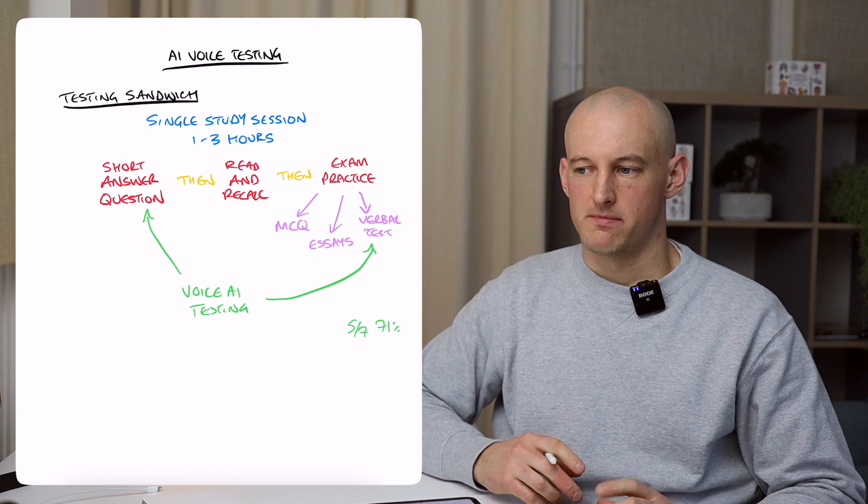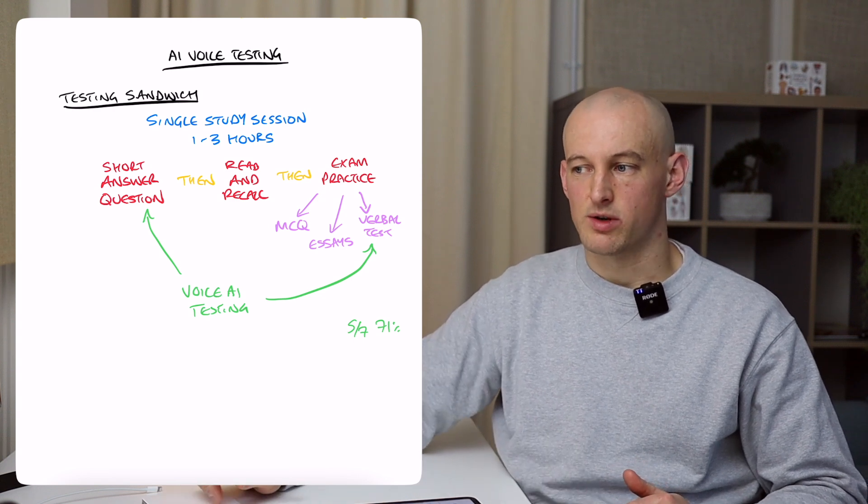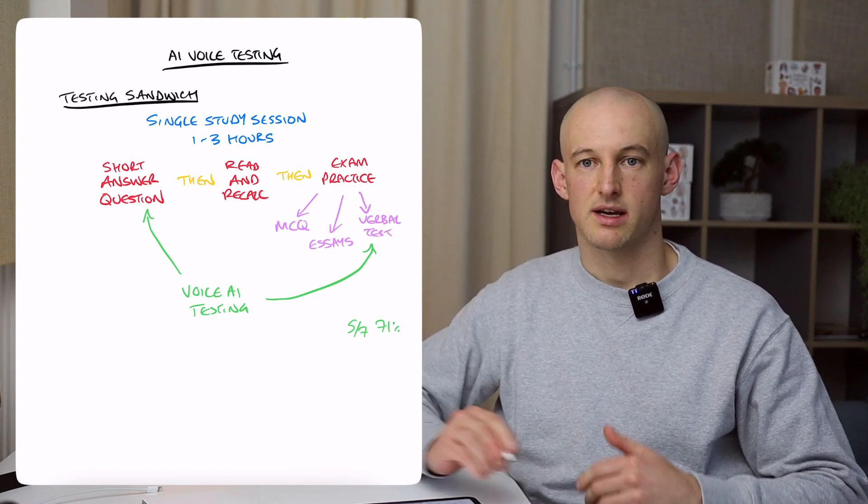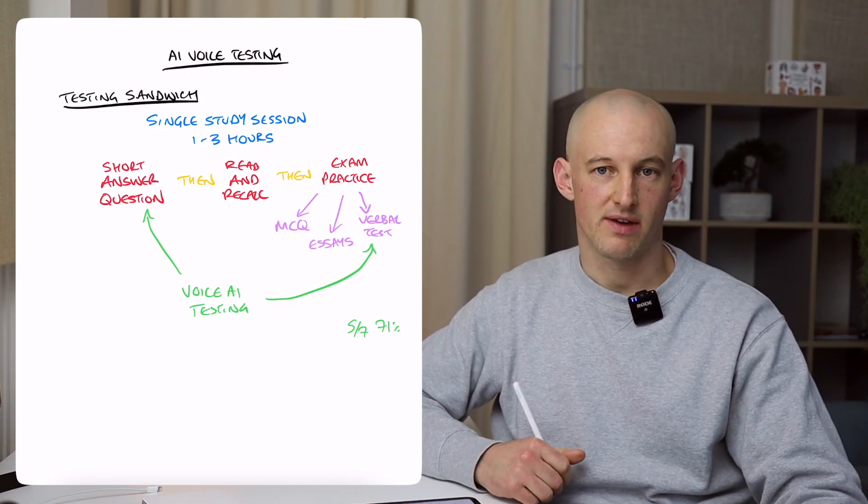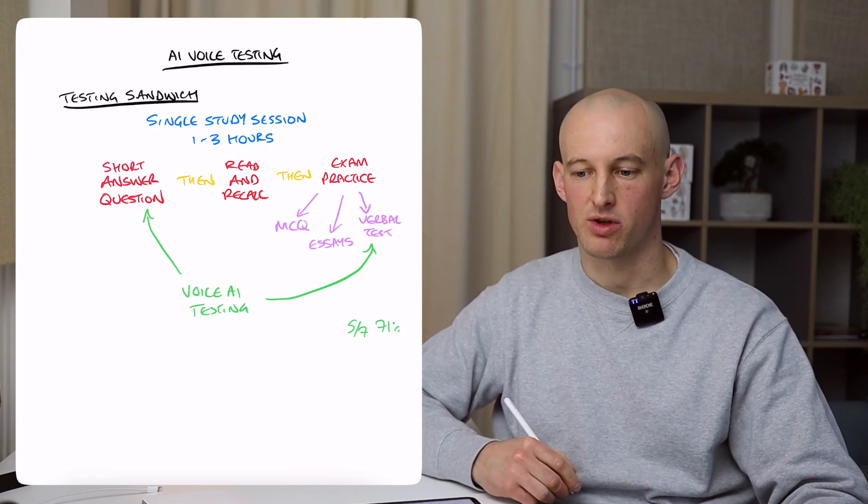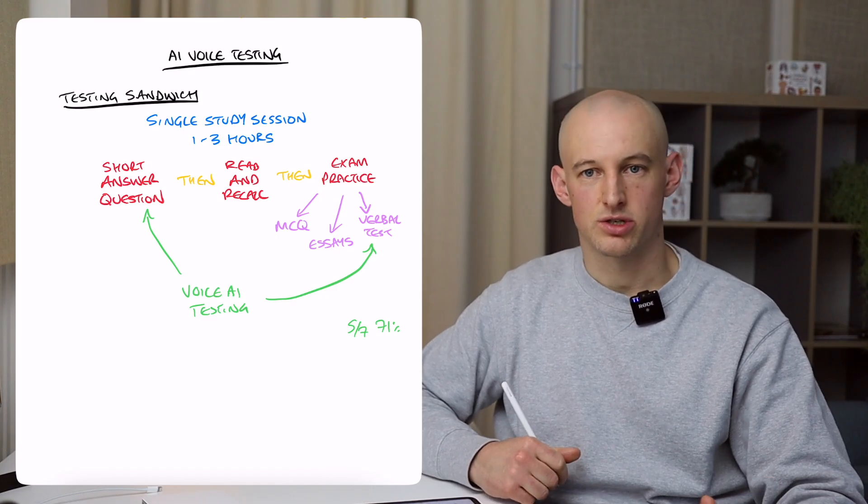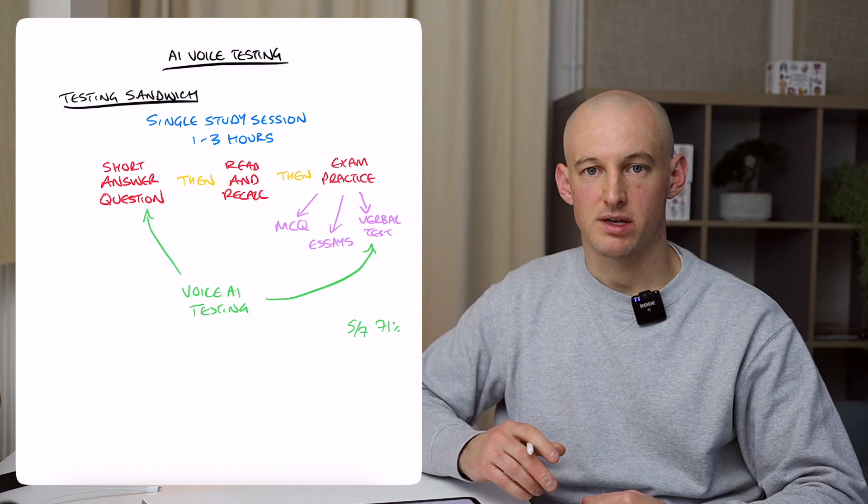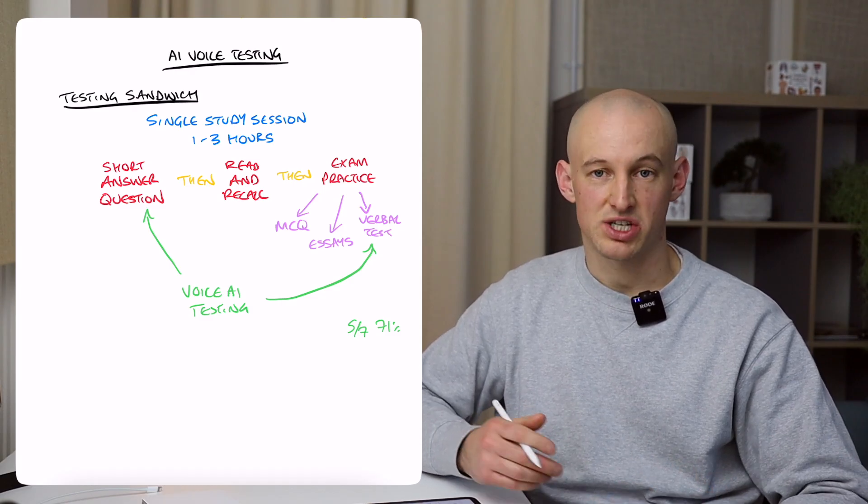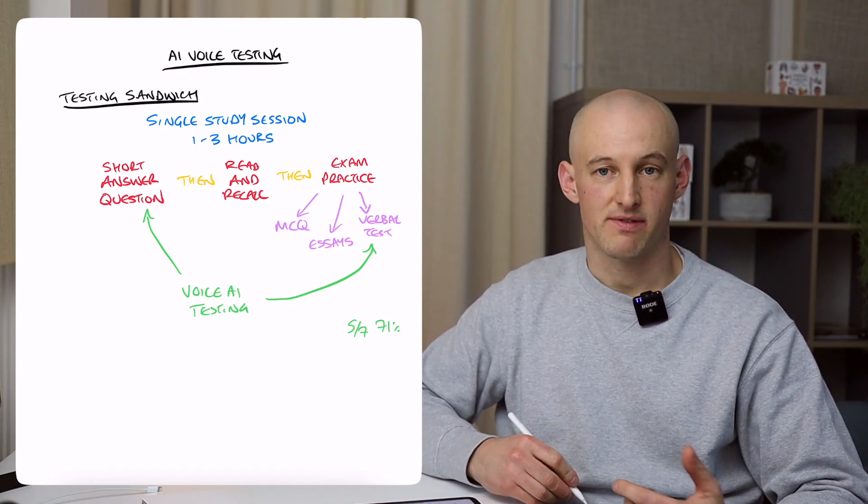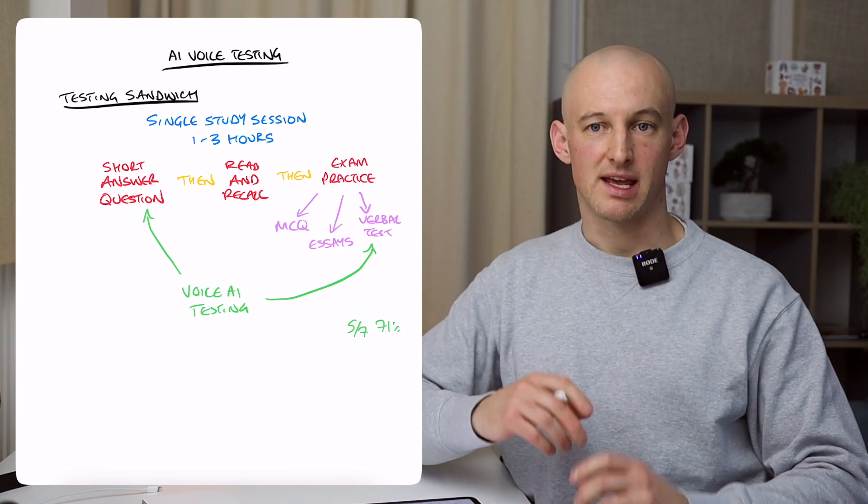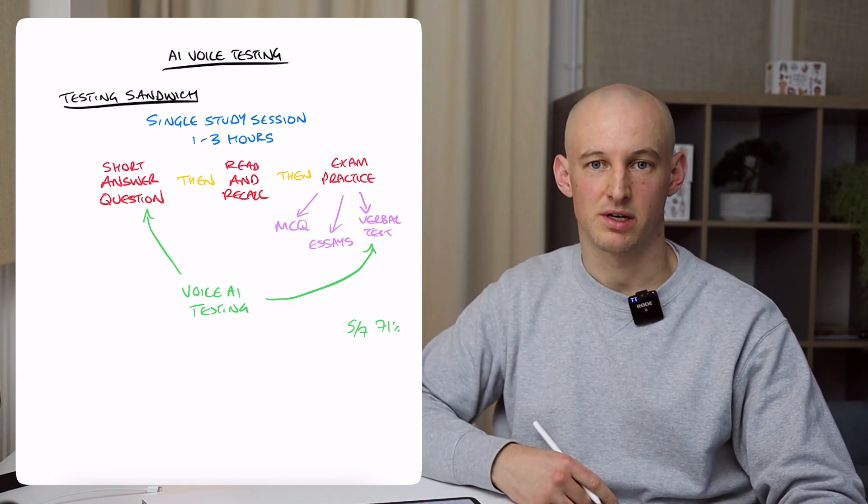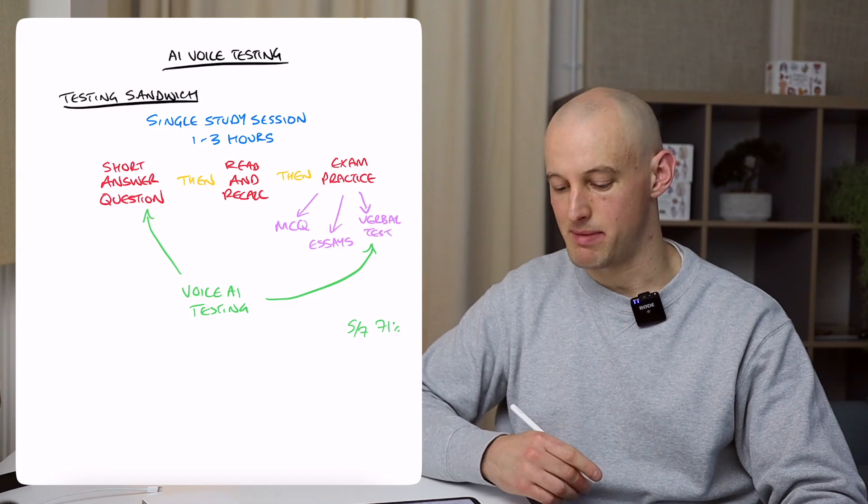So there we have a score of five out of seven, 71%. So hopefully that demonstrates what you can do. You could continue testing yourself indefinitely. It'll keep coming up with questions. If you find the questions are too long, too short, or there's some kind of problem, you just ask the AI to adapt and change them. So it's actually very powerful to tailor it exactly to what you want them to talk to you about.